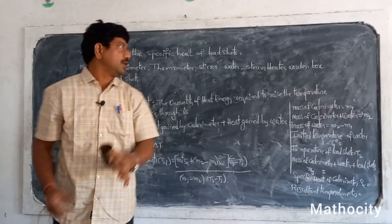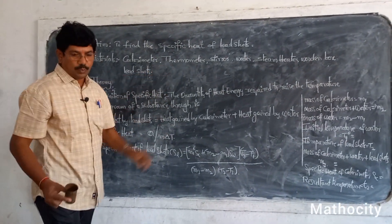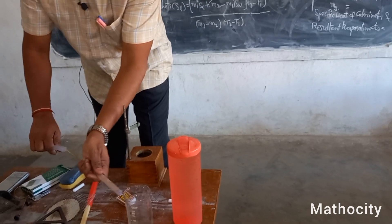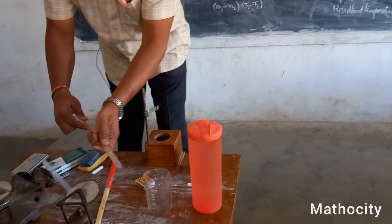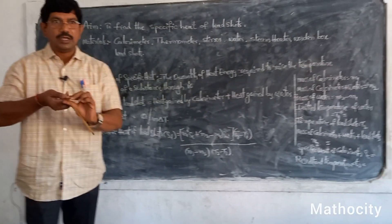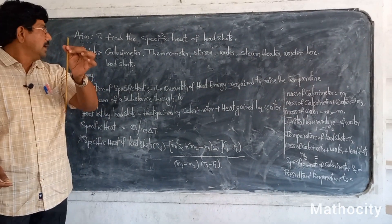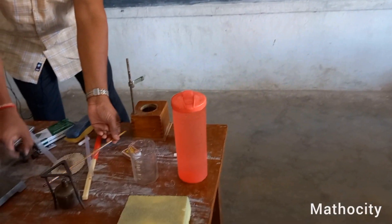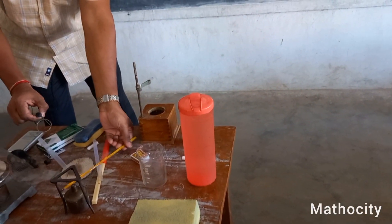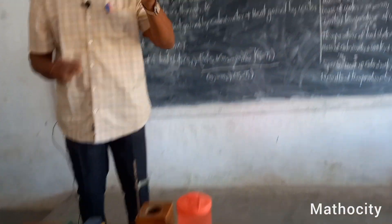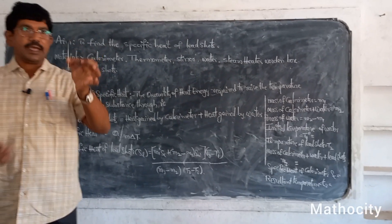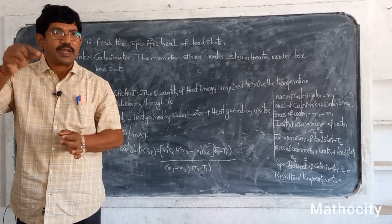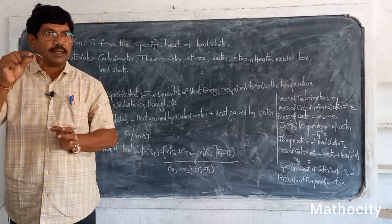Next is the thermometer — this is the laboratory thermometer. Next one is the stirrer. This stirrer is used to equalize the temperature inside the liquid.